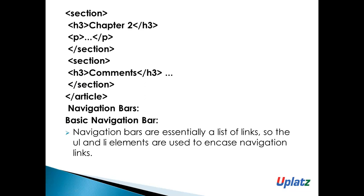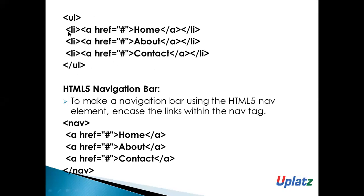Next is the navigation box. It is basically a list of links. The li elements, which we have already discussed, are used to enclose navigation links. In the unordered list, all the href navigation links are enclosed inside this list. What is the HTML5 navigation bar? Using the HTML5 nav element, you can place all links within the nav tag, and you can enclose your navigation links inside the nav element tag.